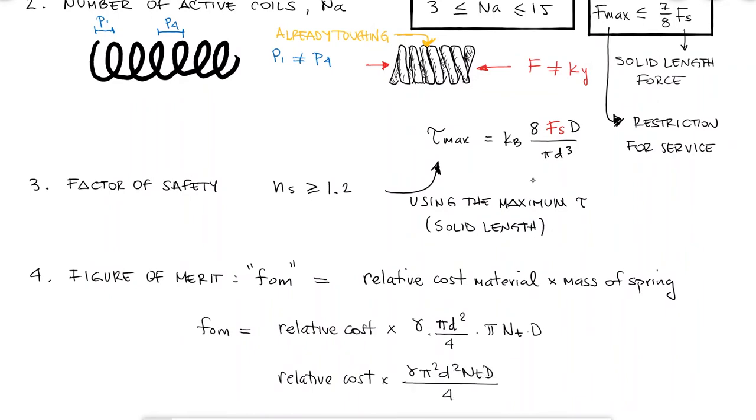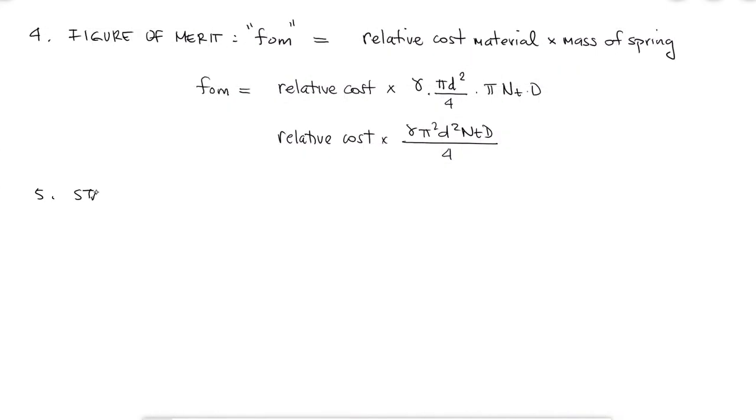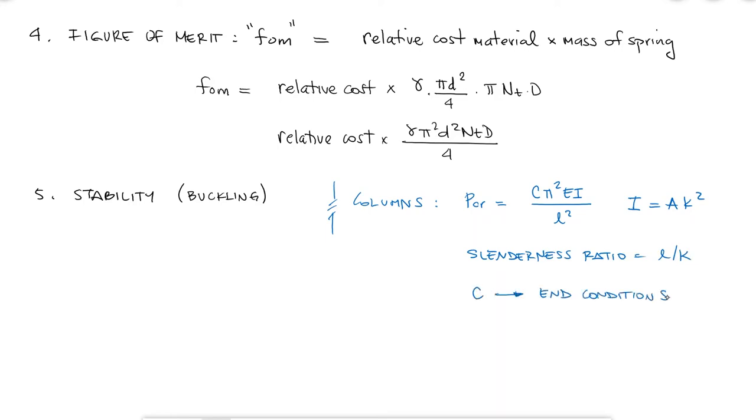For stability, we look at something very closely related to the buckling of a column. If you remember, for columns, you would look at the Euler column formula and solve for the critical load P_cr = pi squared EI over L squared, where the second moment of area I is the area times the radius of gyration squared, and L over k is the slenderness ratio, link to a Mechanics of Material video in the description below, which is basically how the column was restricted or free to move on each end. The critical load in this expression means that the column would buckle when the load becomes too large.